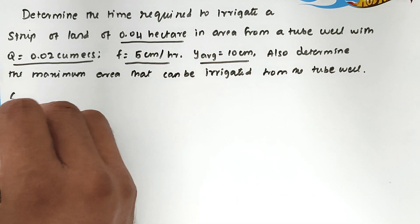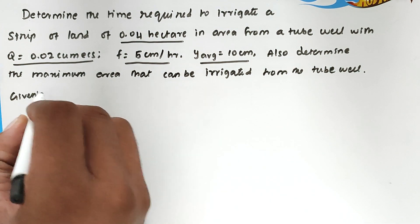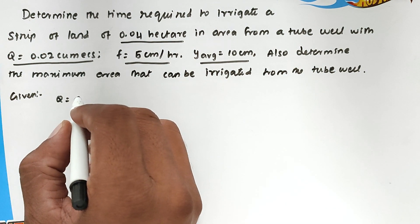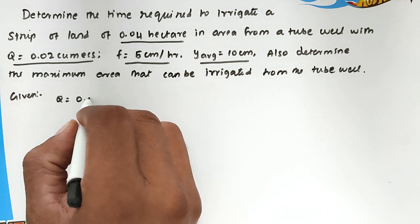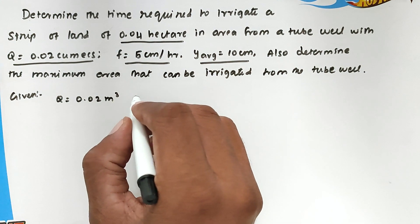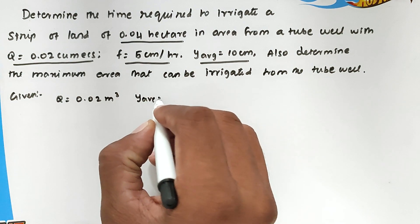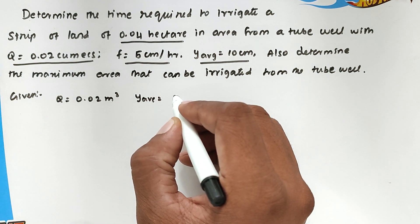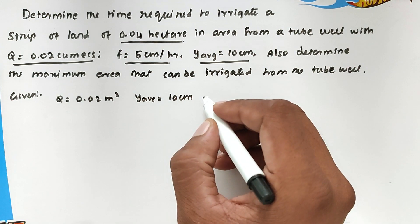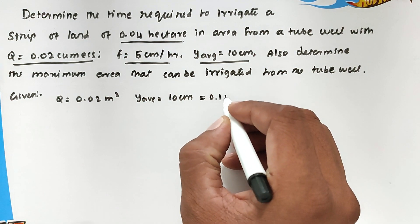So now the given values: Q, that is discharge through the supply ditch, is 0.02 meter cube. Then Y average, that is average depth of water flowing over the strip, is 10 centimeter, which is 0.1 meter.